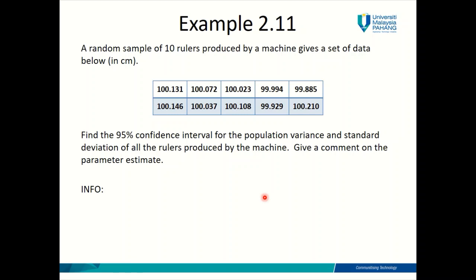But this should not be a big problem because the only difference between sigma square and sigma is just that you need to add a square root to the formula of sigma square in order to get the formula for sigma. So this is not a big deal. I don't think you're going to struggle on getting the formula, right? Okay, let's get on to the first example. A random sample of 10 rulers produced by a machine gives a set of data below in centimeter. Find the 95% confidence interval for the population variance and standard deviation of all the rulers produced by the machine. Give a comment on the parameter estimate. Now, before you go and try to answer the question, first thing first, get all the information out from the question.